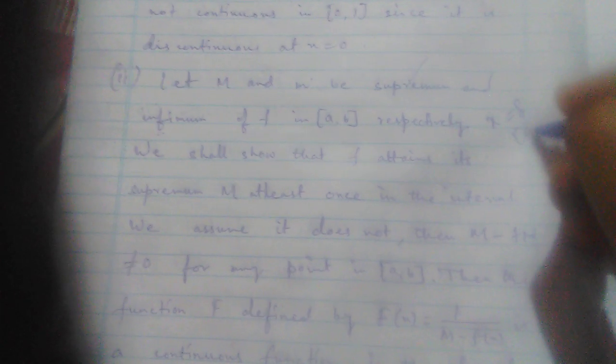We know that for any point xi in the closed interval [a, b], f(xi) should equal M — but by assumption this is not happening. There is no such point xi in the closed interval. Therefore M - f(x) ≠ 0 for all x, because M is not attained at any point in [a, b].